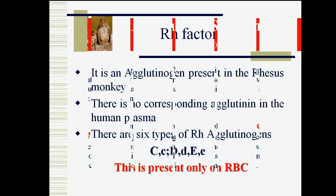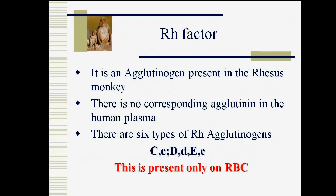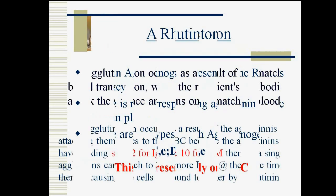The Rh factor is an agglutinogen present in Rhesus monkeys. There is no corresponding agglutinin in human plasma. There are six types of Rh agglutinogens: C, D, E — both capital and small letters. These are present only on RBCs.